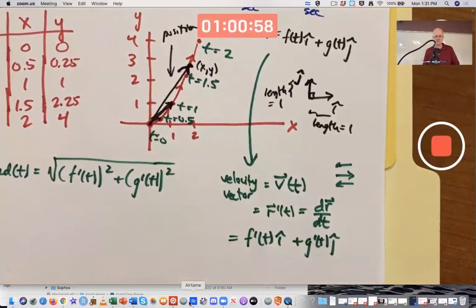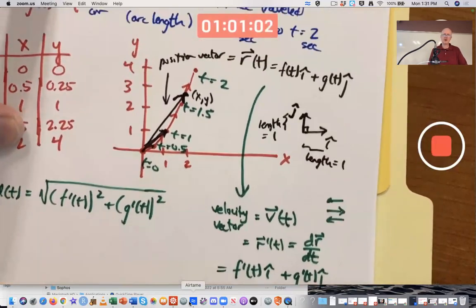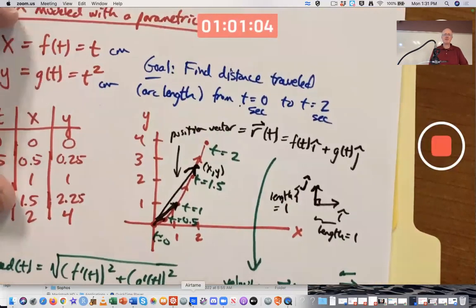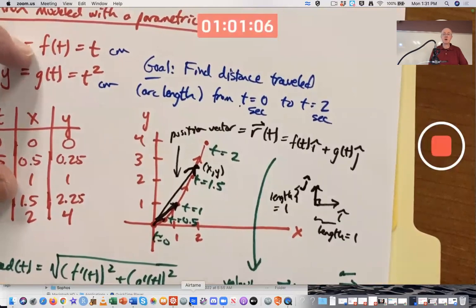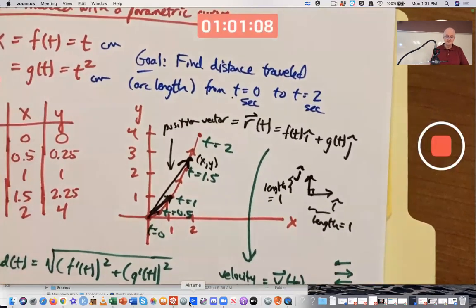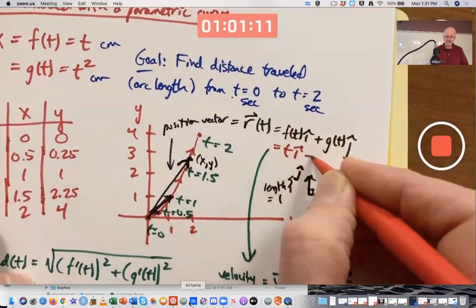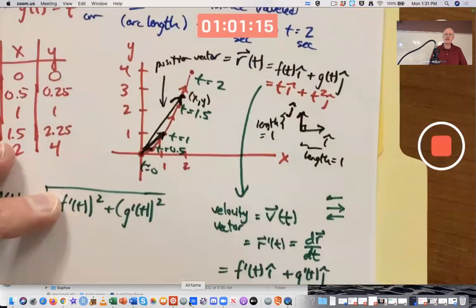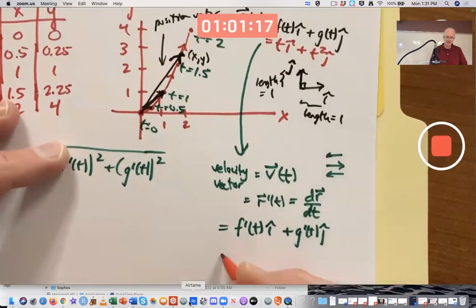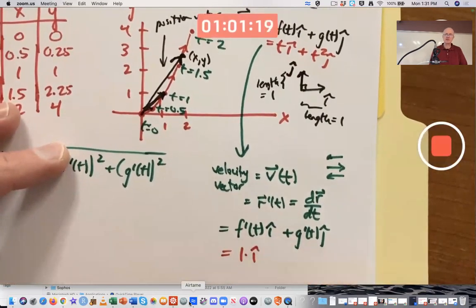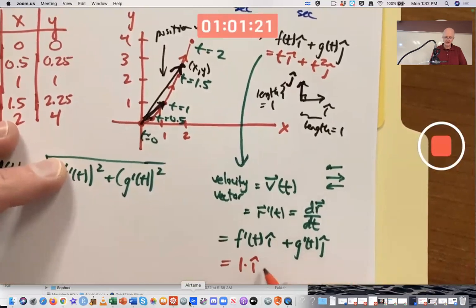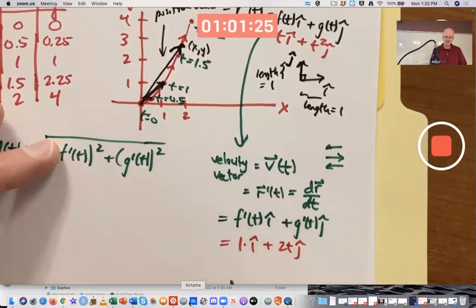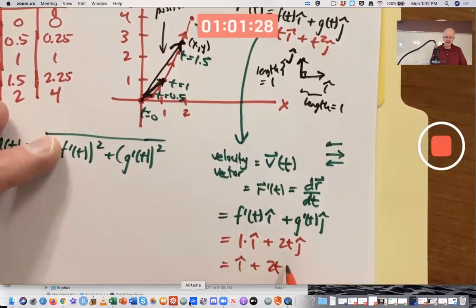So for our problem, what are these things? For our problem, F of T is T, G of T is T squared. The position vector is T i-hat plus T squared j-hat. And the velocity vector is 1 times i-hat, the derivative of T is 1, plus 2T j-hat. In other words, it's i-hat plus 2T j-hat.